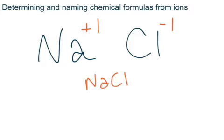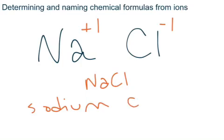The rules for naming the compound: metals always keep their name the same. The metal goes first and is always named the same name — sodium is sodium is sodium. Then the non-metal, which is always written second, is going to change the end of its name. The very last syllable changes to "-ide" instead of whatever it is on the periodic table. So rather than chlorine, we now call it chloride. So NaCl is sodium chloride.